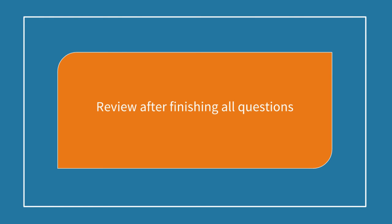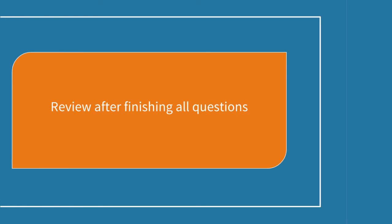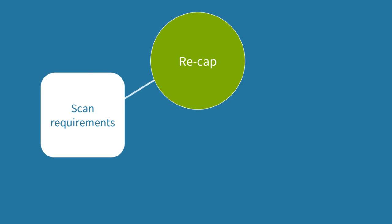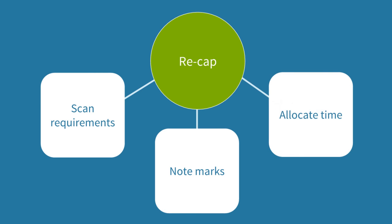In the exam you're unlikely to have much time left to review your answer, so move on to the next question and only come back to review this if you finish the exam early. Now let's have a recap. We scanned the requirements and saw three parts: A, B and C. We noted the marks available and time allocations for each. We made a start on part A before even looking at parts B and C — this is important because you shouldn't let multiple requirements overwhelm or confuse you.